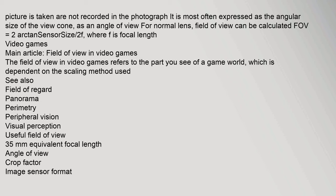Photography: The field of view refers to whether a picture is taken or recorded in the photograph. It is most often expressed as the angular size of the view cone, as an angle of view. For a normal lens, field of view can be calculated as: FOV = 2 arctan(sensor size / 2f), where f is the focal length.